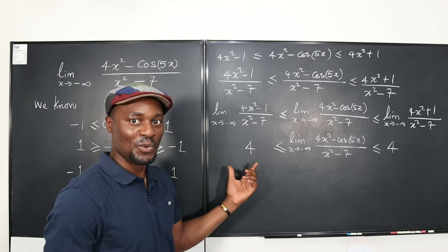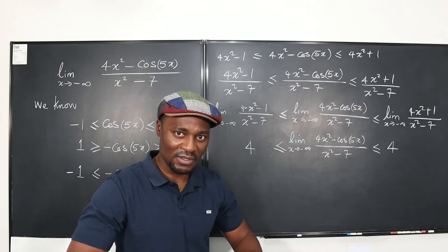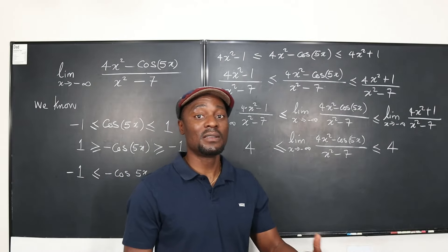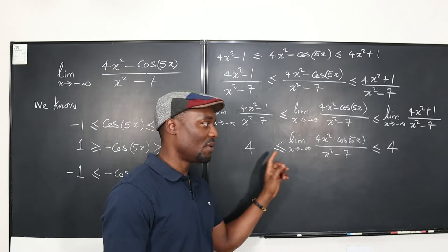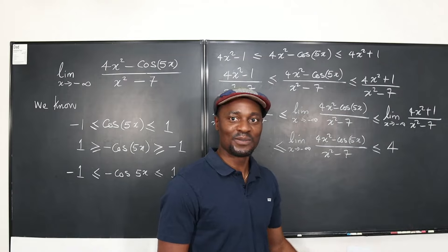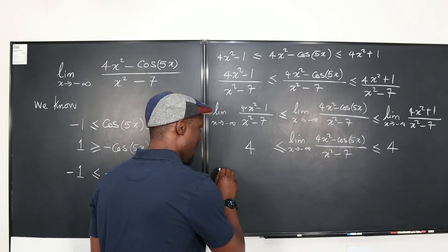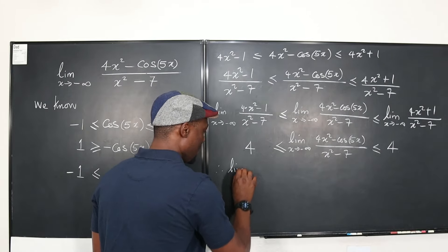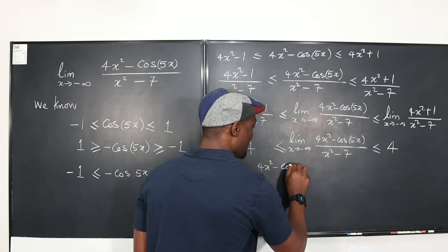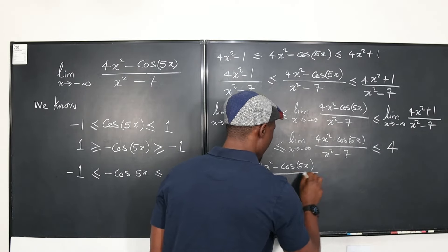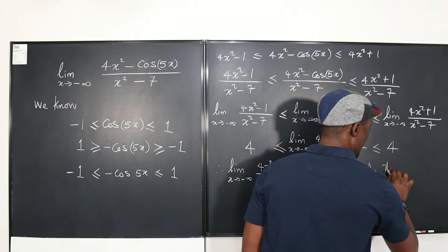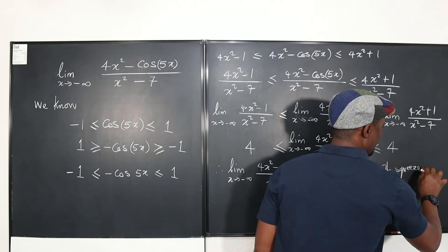So the middle expression is sandwiched — squeezed — by two 4s. That makes it 4, because it's impossible for it to be anything other than 4. There is nothing greater than 4 and less than 4. Therefore, the limit as x→−∞ of (4x² − cos(5x))/(x² − 7) = 4, by the squeeze theorem.